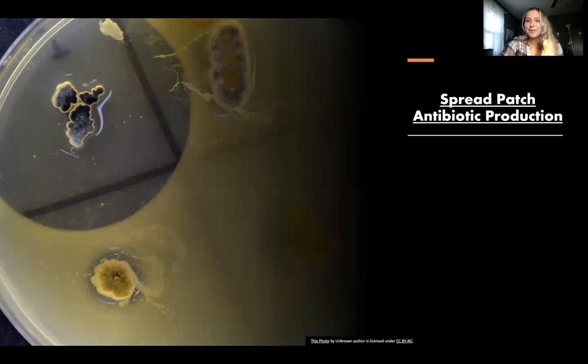Next is my favorite part - the spread patch antibiotic production. This image is a perfect example showing exactly how you can tell if you have a positive antibiotic producer. This halo-like ring you can see surrounding this bacteria shows that the bacteria is able to ward off anything that comes near it, and that's positive antibiotic production.